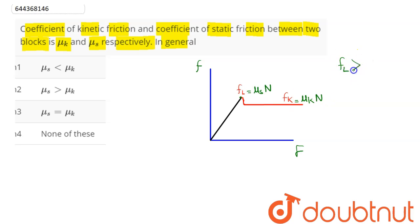we can see here limiting friction is greater than kinetic friction, which implies here μ_s N is greater than μ_k N. Hence, we can say here coefficient of static friction is greater than coefficient of kinetic friction.